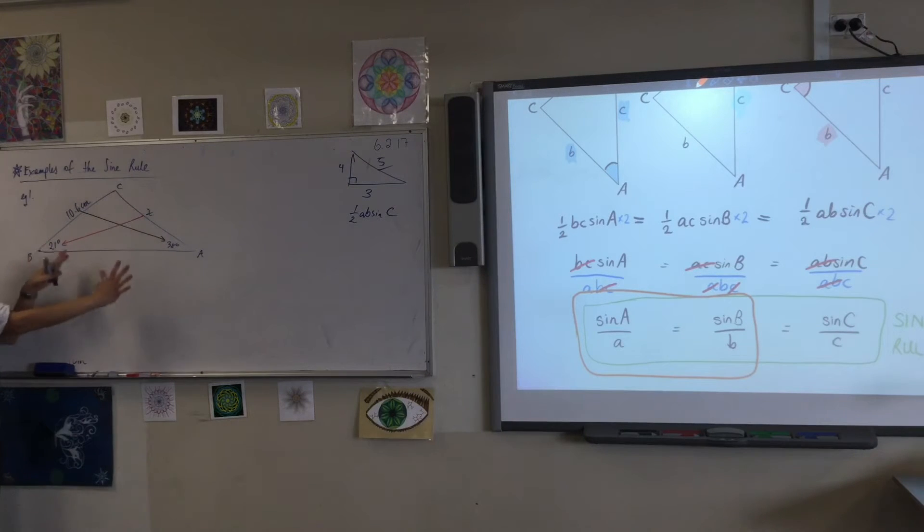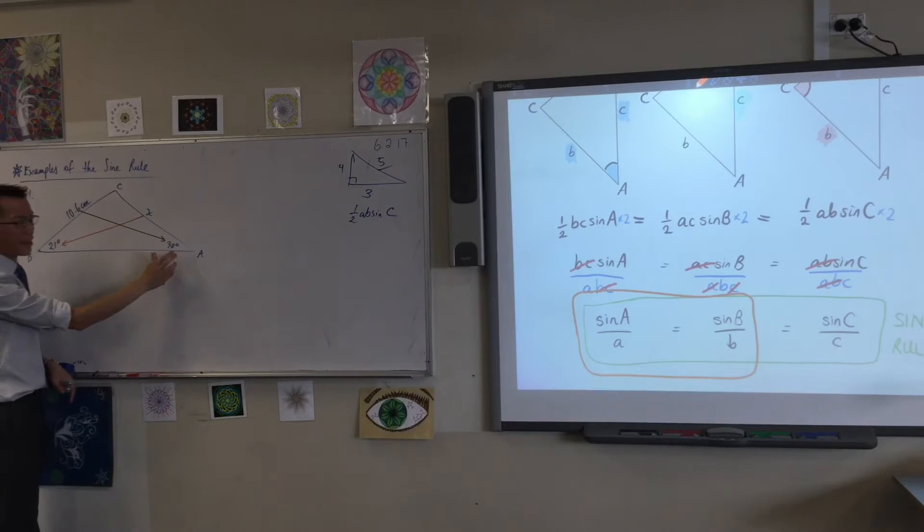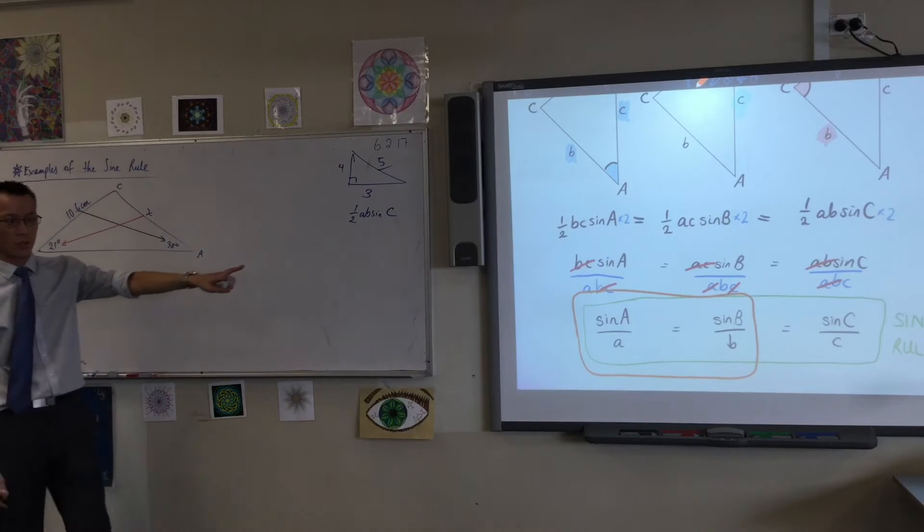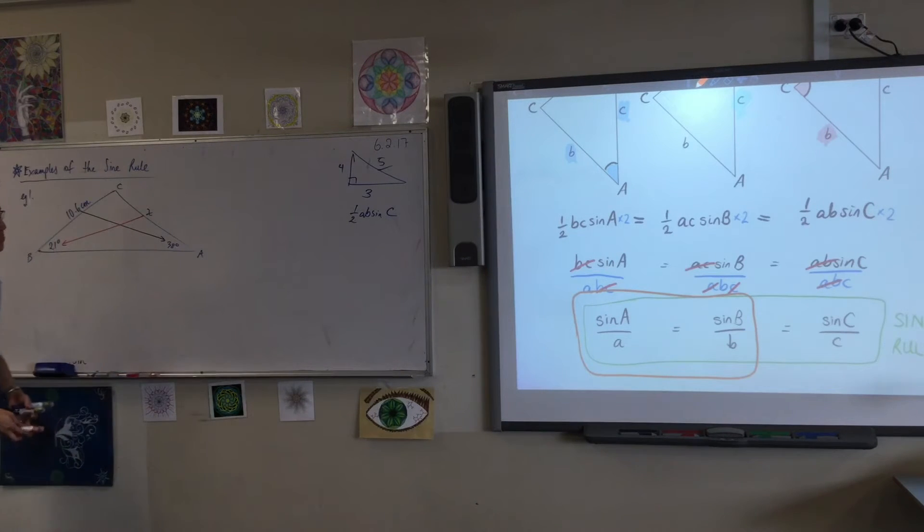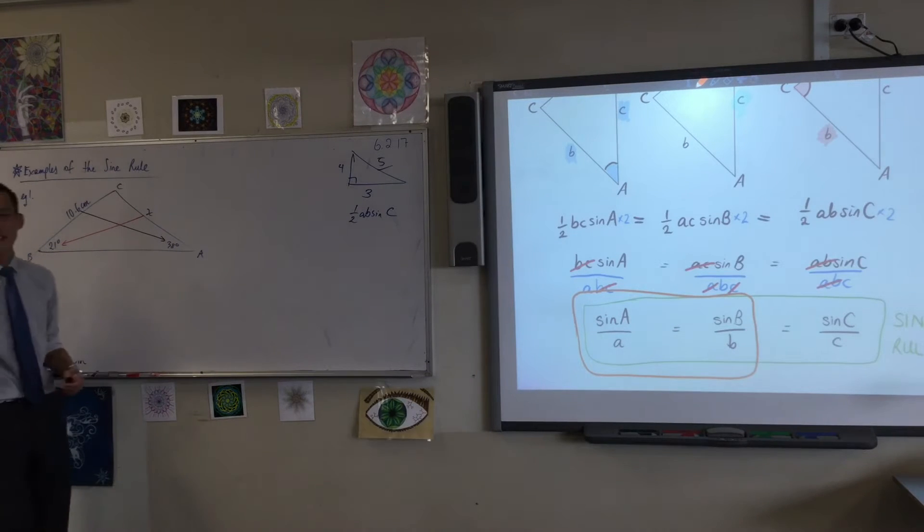So I'm going to use this pairing: X and 21 degrees, 10.6 and 38 degrees. I'm going to use it with this to work out my own. Now underneath where you've written this I want you to write one more thing.